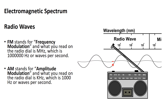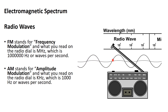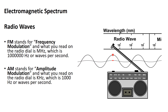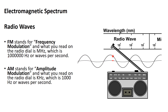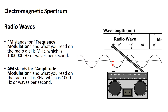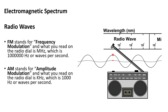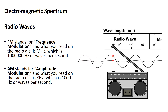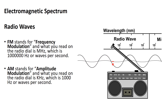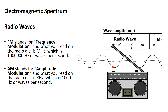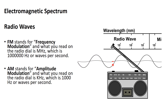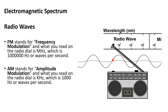In FM, when you hear something like 95.5, that's talking about frequency modulation, and that is in megahertz, which is the same as 1 million hertz or waves per second. Hertz means waves per second. AM radio is called amplitude modulation and is in kilohertz, which is 1,000 hertz. So AM radio has a lower frequency and bigger wavelength, placing it closer to the left side.